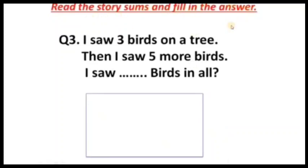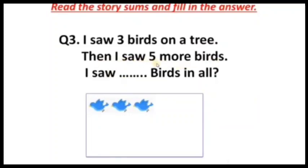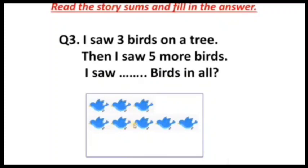Next question: read the story sums and fill in the blocks. The story sum is given; you have to read it and fill in the blank. 'I saw three birds on a tree.' How many birds? Three birds. 'Then I saw five more birds.' Five birds also. 'I saw dash birds in all' — count the total birds: one, two, three, four, five, six, seven, eight. Eight birds in all. The sentence is three plus five equals eight.